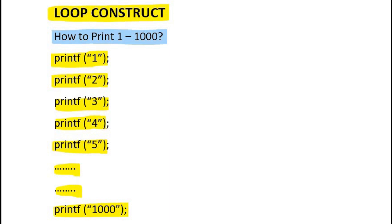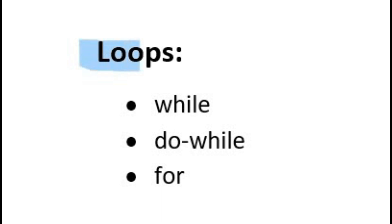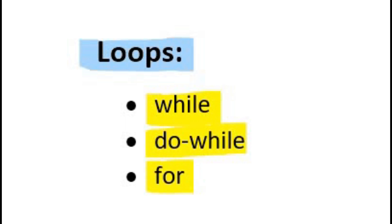Loop means repeating a specific task for several times. The loops provided by C language are while loop, do while loop, and for loop. In this lecture, we will discuss the while loop and do while loop. The for loop will be discussed in the next lecture. So let's start with while loop.